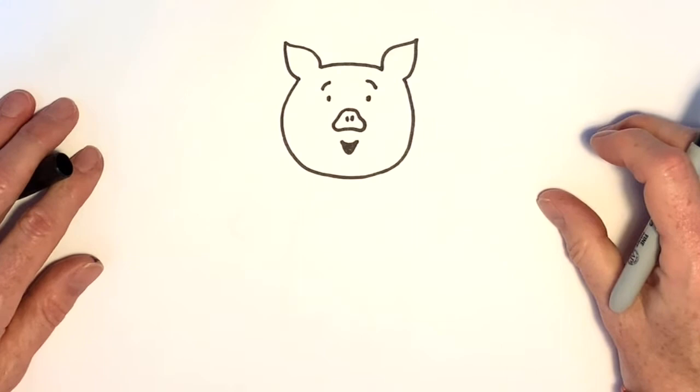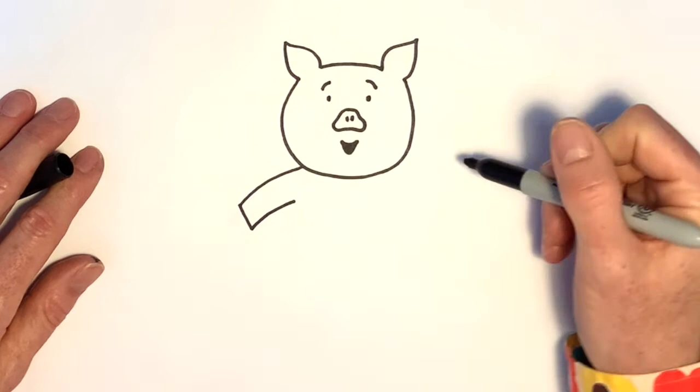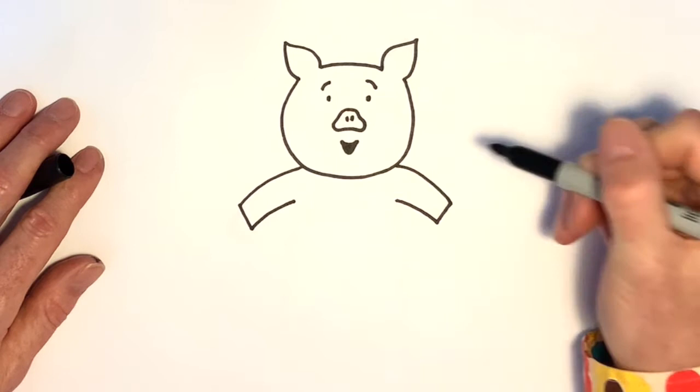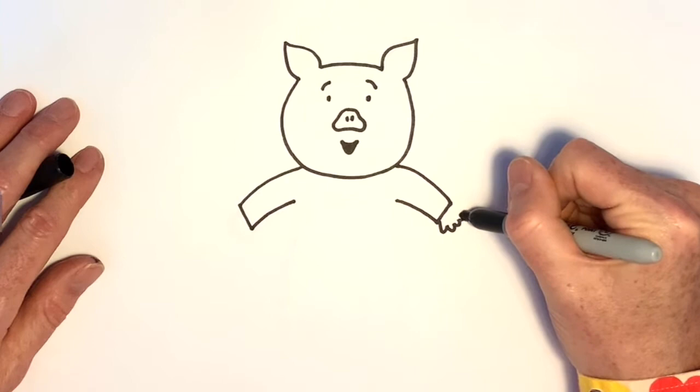Now, on either side of the piggy's body, we're going to draw two arms, like this. And add two little hands, one there and one there.